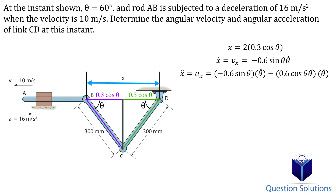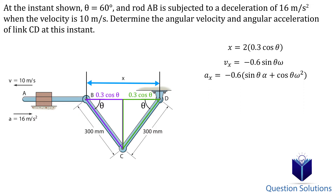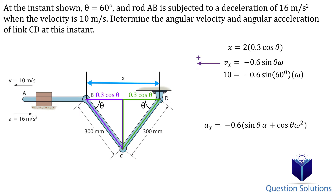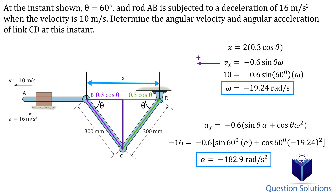Now for the second derivative — let's simplify while switching out the theta dots with angular velocity and angular acceleration. Now we can plug in our values, starting with velocity. We assume left to be positive and solve for angular velocity. Next, for acceleration, we plug in the values along with the angular velocity just found. Since it's a deceleration for rod AB, it's negative. Solving gives us the angular acceleration — those are our answers.